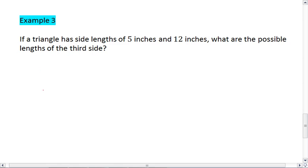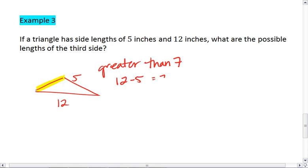We have a triangle that has lengths of 12 and 5. So this third side must be greater than 7. Because 12 minus 5 equals 7.